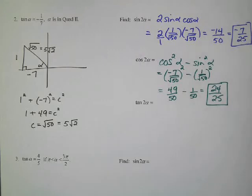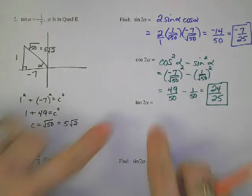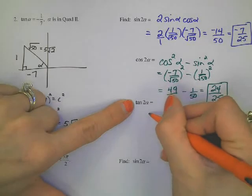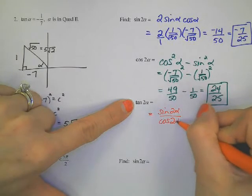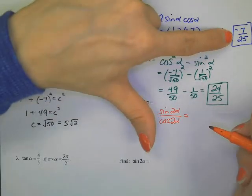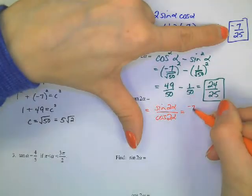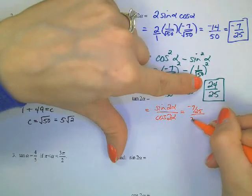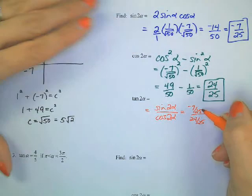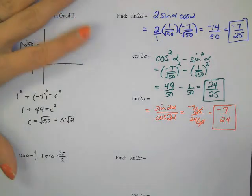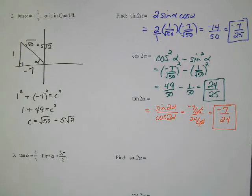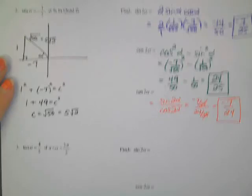And we could use that tangent formula again. Or how many of you are thinking, let's try the trick. Tangent of 2 alpha is sine of 2 alpha divided by cosine of 2 alpha. So if I take the sine answer, which is negative 7 over 25, and divide by 24 over 25, denominators cancel with denominators, and we get negative 7 over 24. For fun, if you would like to try the tangent formula, you'll get the same thing. I think in our homework tonight, you're going to actually have to use the formula, though, for practice.